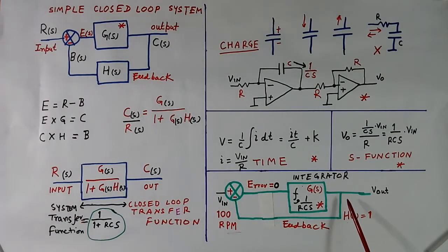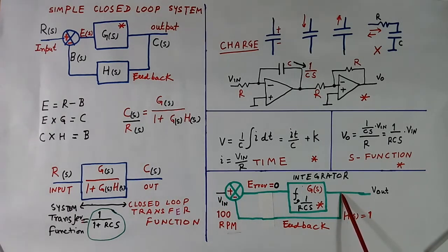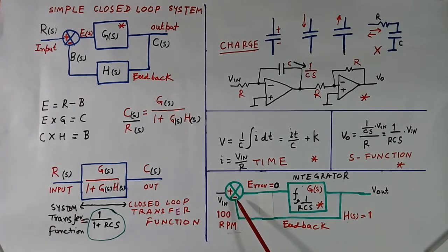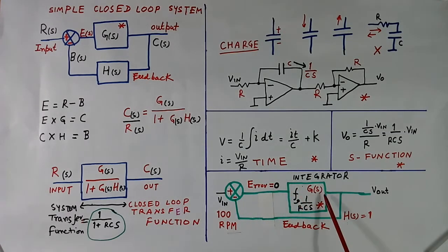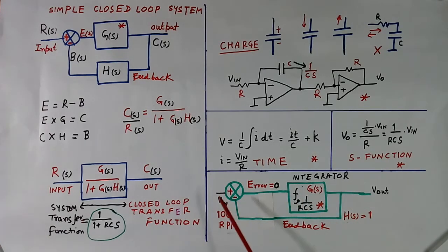Now here, suppose motor speed decreases because of overload — we put more load. So we have set 100 RPM, it was working at 100 RPM, now 100 has become 90. Then again the same thing: this is 100, this is 90, you get plus 10. Because of the plus error, capacitor charging will increase, this voltage will go up, and it will become 100 again. Whatever the reason, the closed loop control system will maintain the speed at 100 RPM because we have set 100.